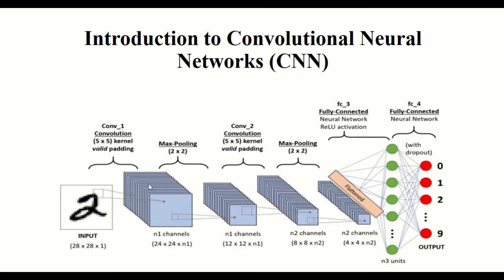Convolution layers learn the features. The filter passes through the image and matrix multiplication happens, producing a very large-sized output. To reduce the size and make the image manageable for the CNN, we reduce the feature map by adding a max pooling layer in between. After the first convolution layer, we add a max pooling layer which reduces the complexity or size that needs to be handled by the CNN.